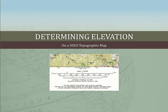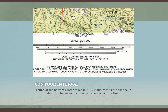Determining elevation on a USGS topographic map. The first thing you need to do whenever you get a topo map is to look at the bottom center of the map. That's where the scale is listed, and it's also where the contour interval is listed. In this case, the contour interval is listed as 40 feet.